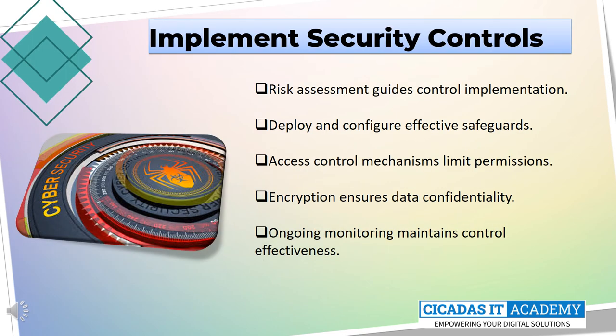This slide highlights the importance of implementing strong authentication, access controls, encryption, intrusion detection and prevention systems, and security awareness training to prevent vulnerabilities. Unique credentials and two-factor authentication can prevent unauthorized access, while access controls restrict access to sensitive data and limit privileges to necessary personnel. Encryption can protect data in transit and at rest, while intrusion detection and prevention systems monitor network traffic and prevent malicious activity. Security awareness training educates employees on security risks and best practices to prevent human error.